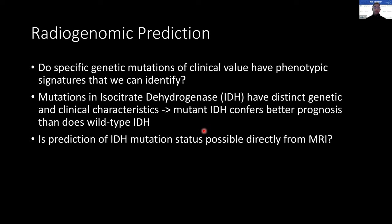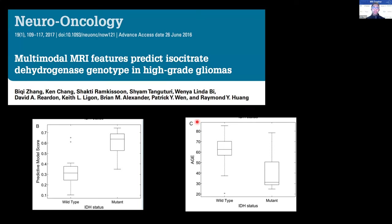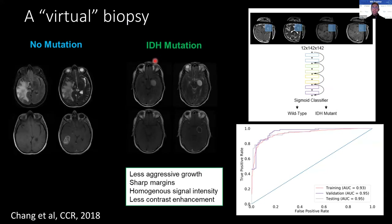Next, I'll discuss some of our work in radiogenomic prediction. Radiogenomics is the field of correlating imaging features to genomic-level data — assessing whether specific genetic mutations of clinical value have phenotypic signatures that we can identify. In relation to GBM, mutations in IDH have been shown to confer better prognosis over wild-type IDH. We looked at whether it was possible to predict IDH mutation directly from MRI, and our classification model can indeed differentiate wild-type IDH from mutant reliably, with a testing AUC of 0.95 on held-out, separate-institution data.